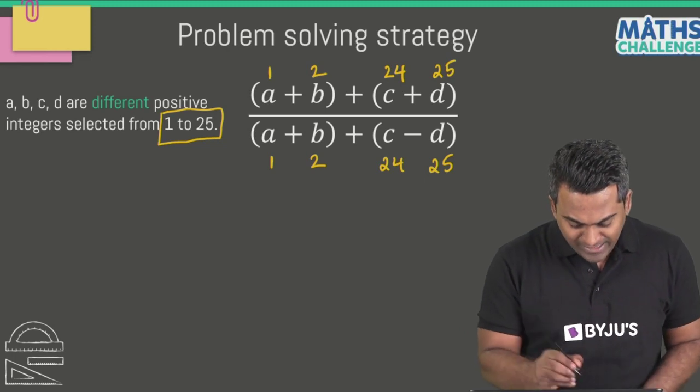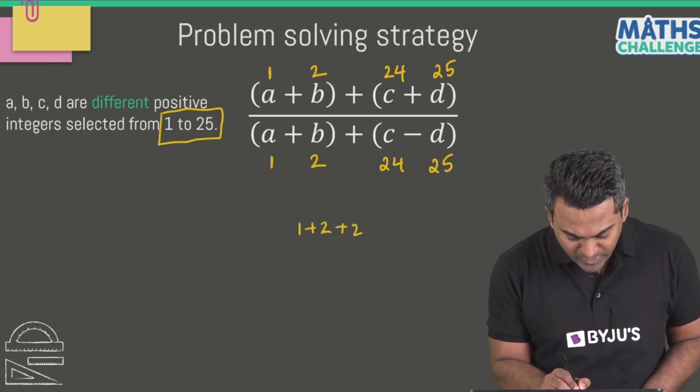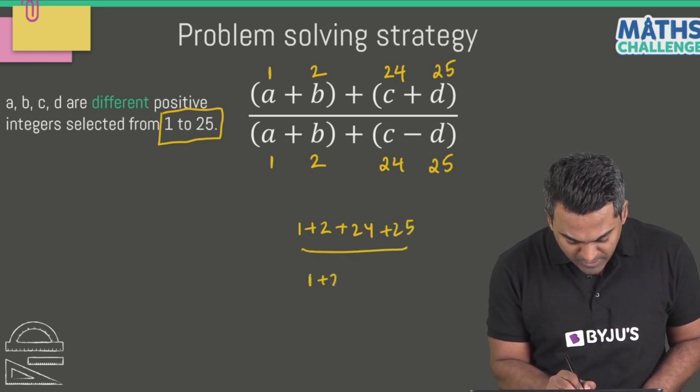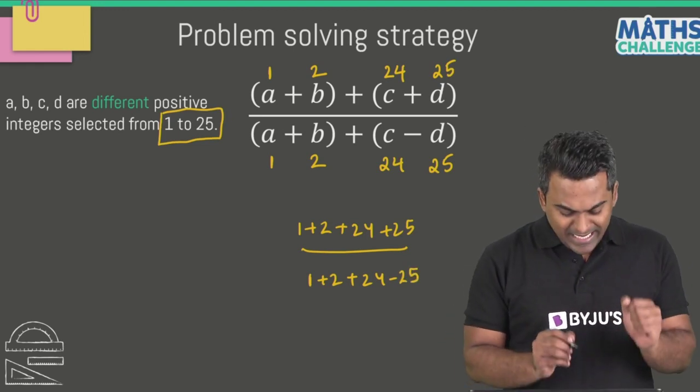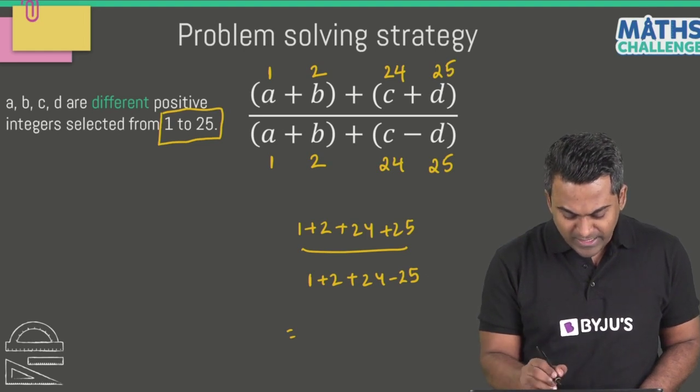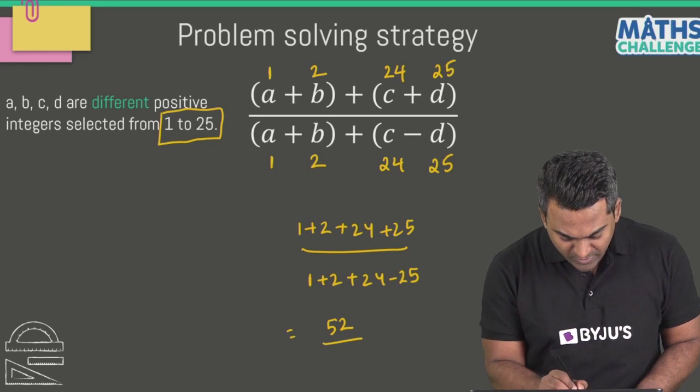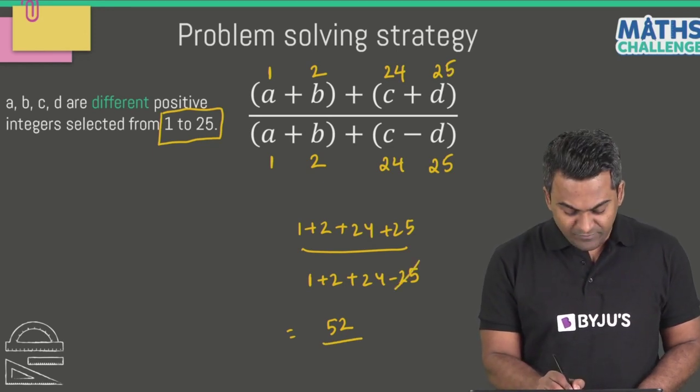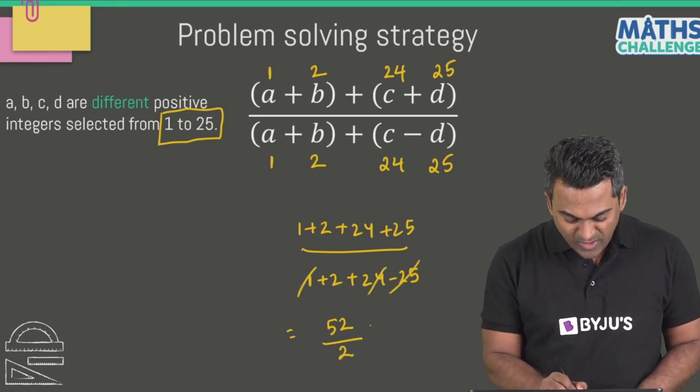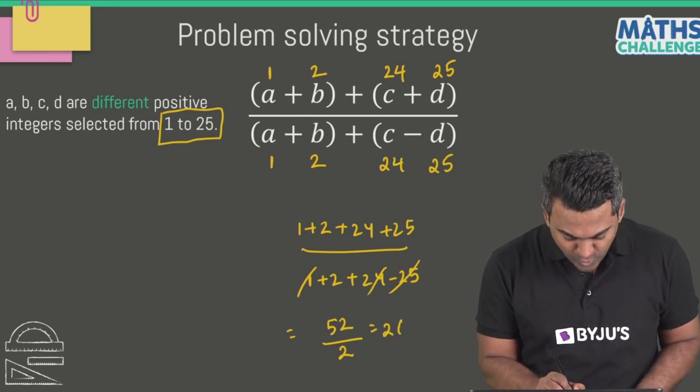Let's see what answer we get. Calculating the numerator: this becomes 1 plus 2 plus 24 plus 25 divided by 1 plus 2 plus 24 minus 25. 1 plus 2 is 3, this becomes 49, 49 plus 3 is 52. Divided by: 24 minus 25 is negative 1, negative 1 plus 3 is 2. So this is becoming 52 divided by 2, which equals 26.